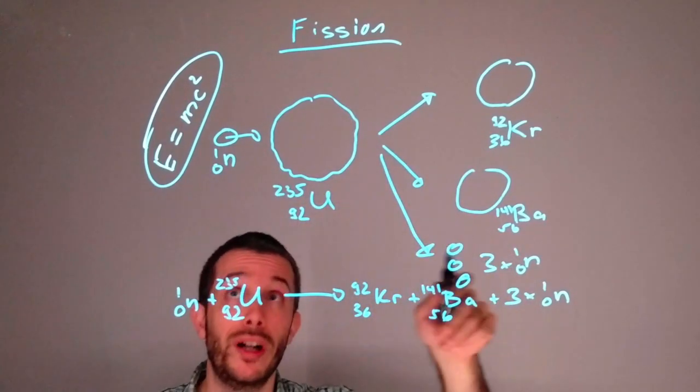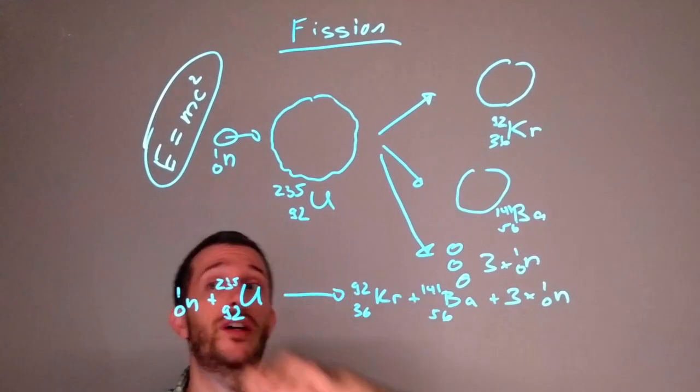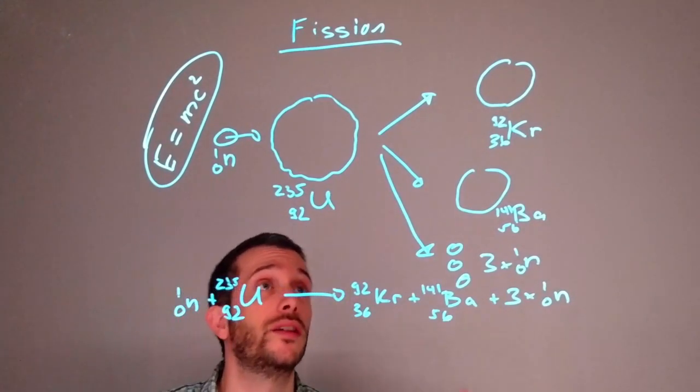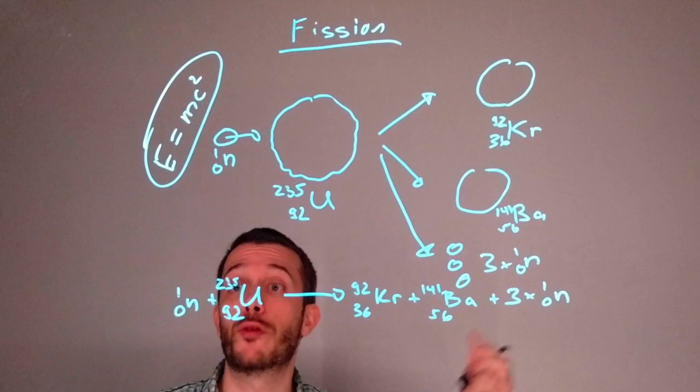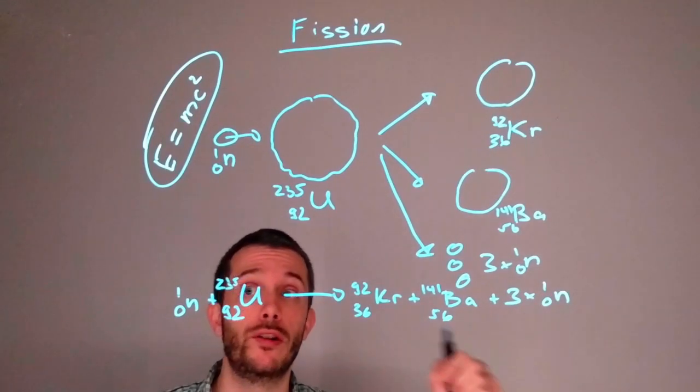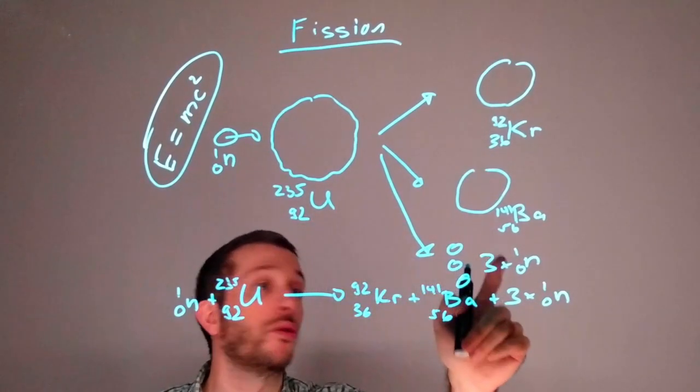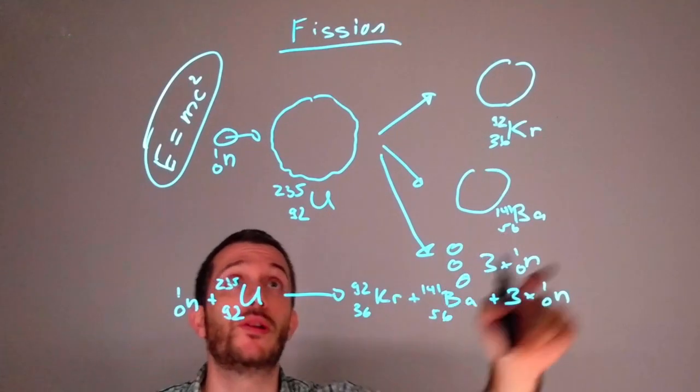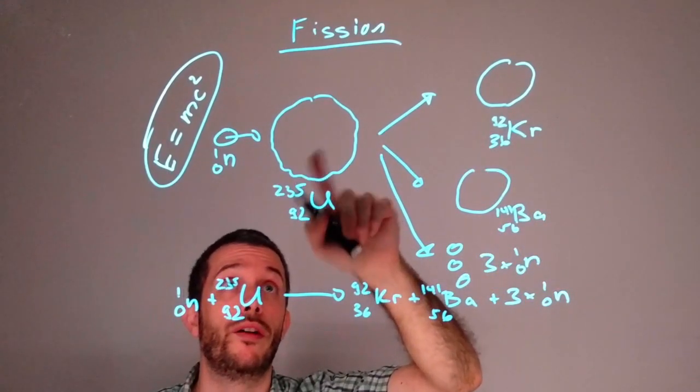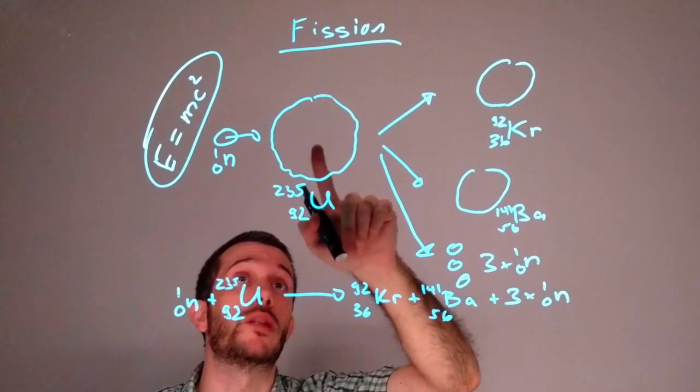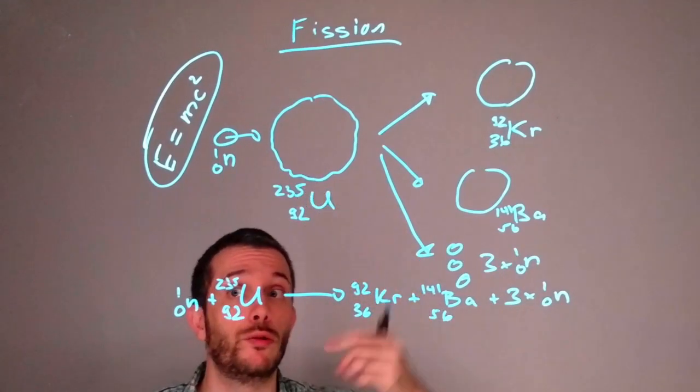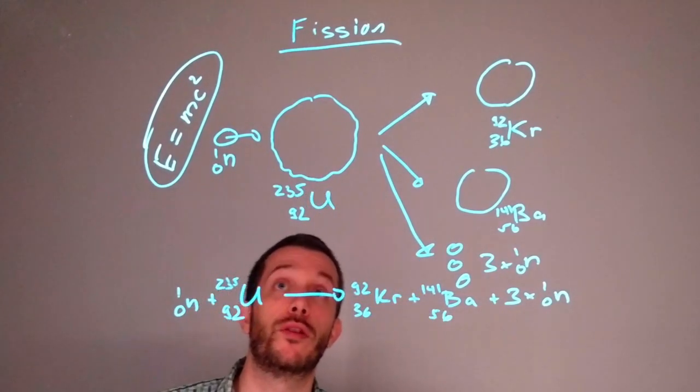So you get more and more and more, and then you get a lot of energy released in one shot and the thing explodes. This is of course exactly what you try to avoid in a nuclear reactor, where you try to control how many neutrons are able to hit other isotopes that could split, so that you don't get a chain reaction that gets out of control.